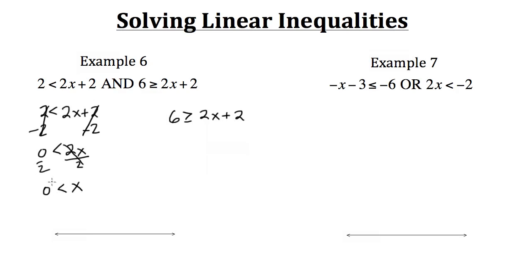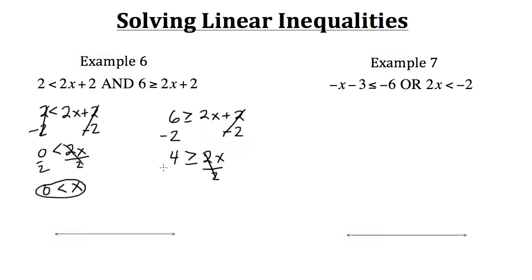For the second inequality, subtract 2 from both sides to get 4 is greater than or equal to 2x. Dividing by 2 gives 2 is greater than or equal to x, so x is less than or equal to 2.